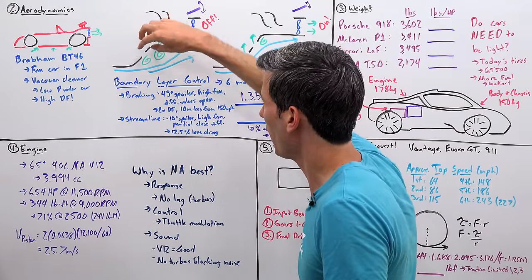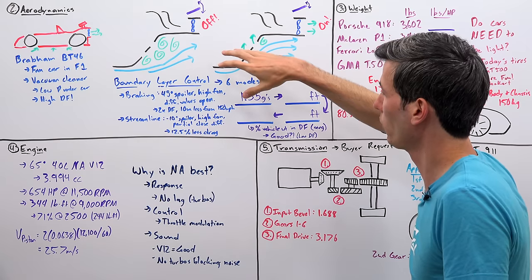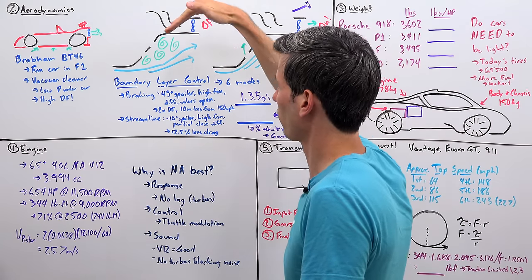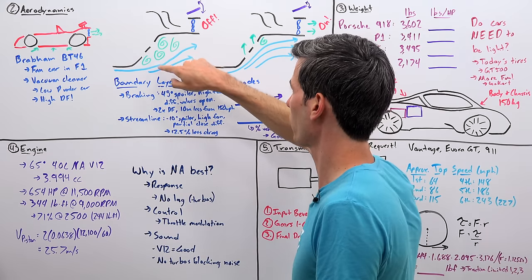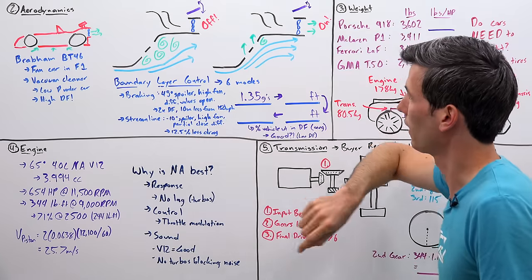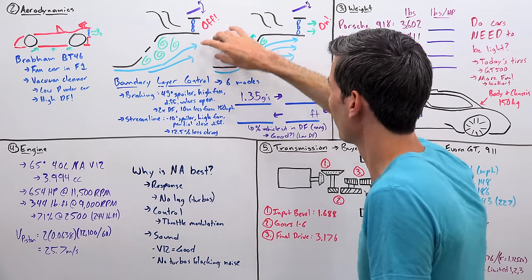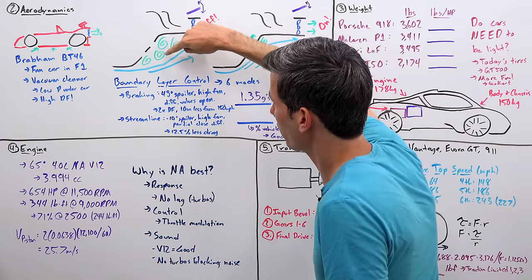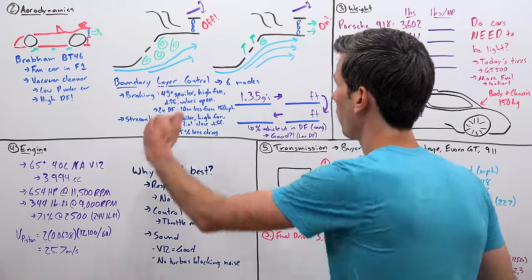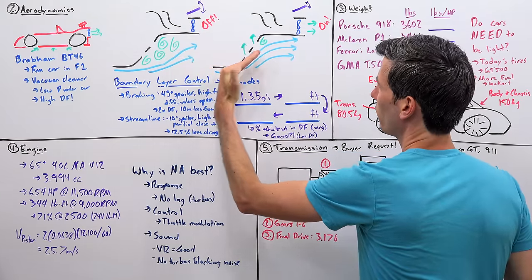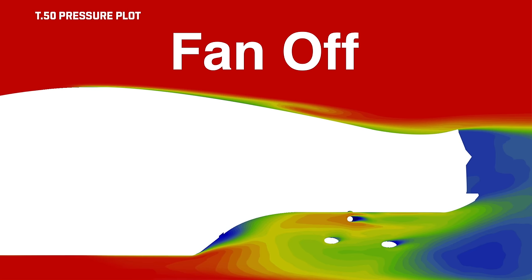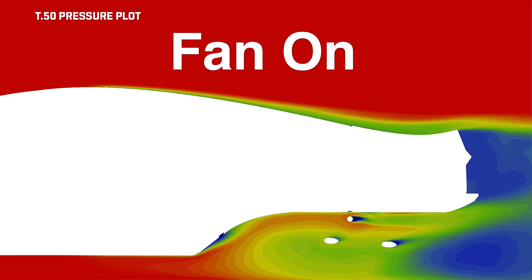Now, the problem with the rake on the diffuser used in the T50 is that it's extremely steep, and so the boundary layer doesn't stay attached. Instead, it just creates turbulence within that diffuser. So, what the fan does is there's these valves, and the fan sucks that turbulent air out of that diffuser, so that boundary layer is controlled, and you have the air move along that very steep rake of the diffuser, and thus increase the actual useful downforce.